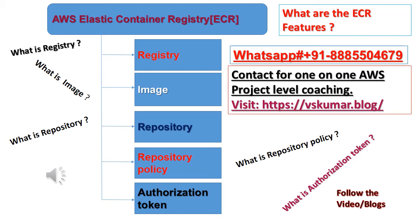2. You can use the Docker CLI or your preferred client to push and pull images to and from your repositories. 3. Amazon Elastic Container Registry, Amazon ECR, is an AWS-managed container image registry service that is secure, scalable, and reliable.